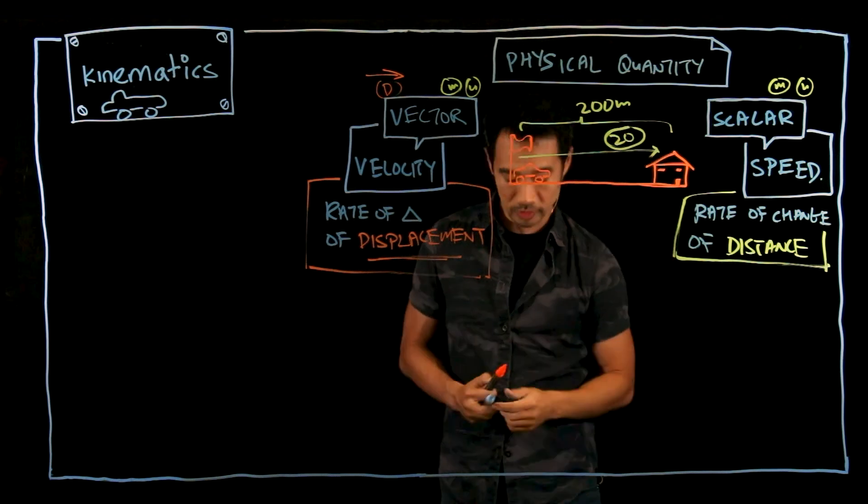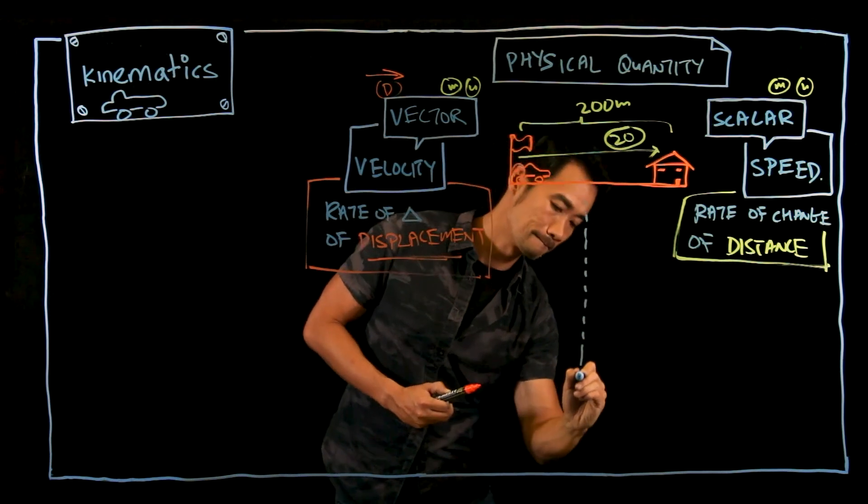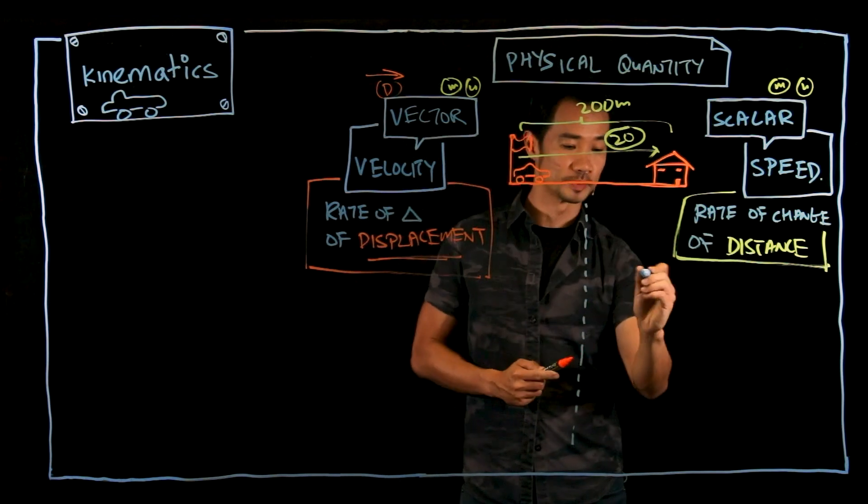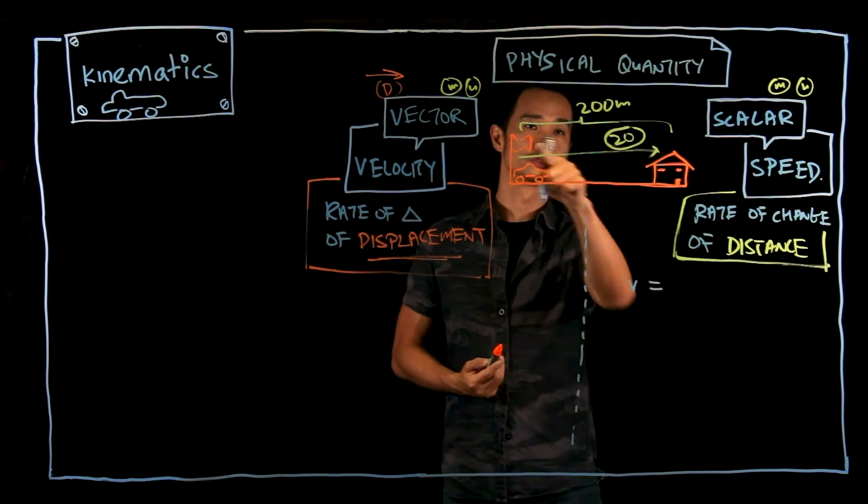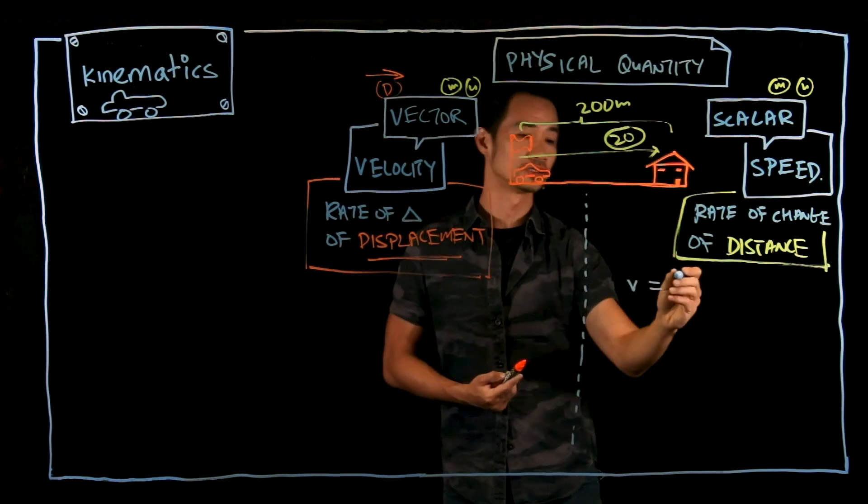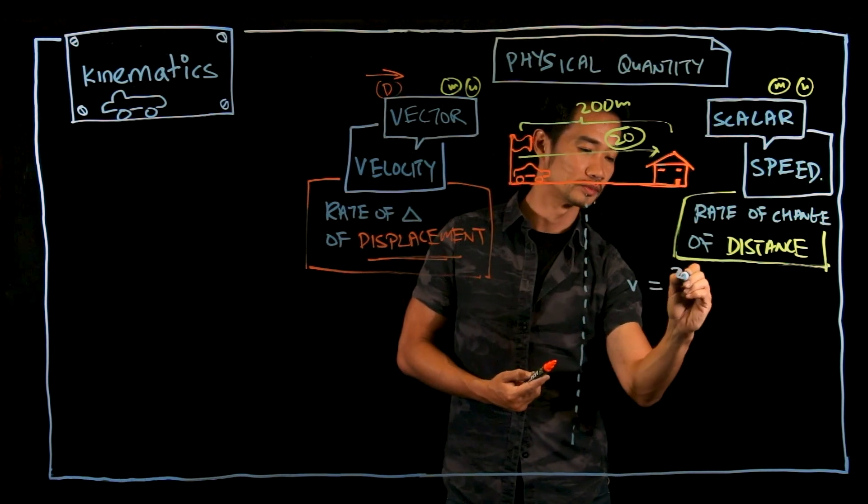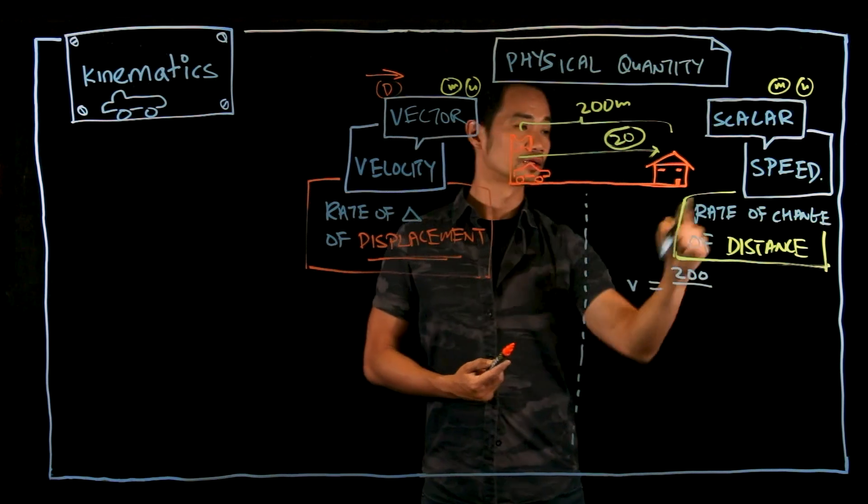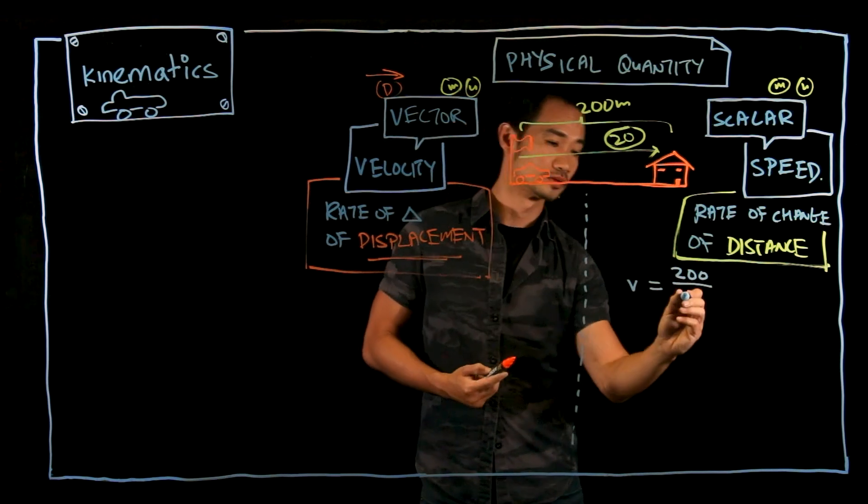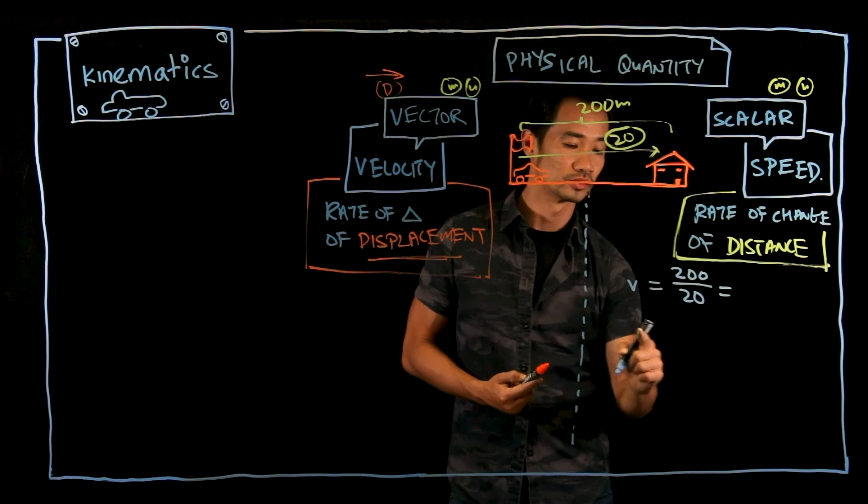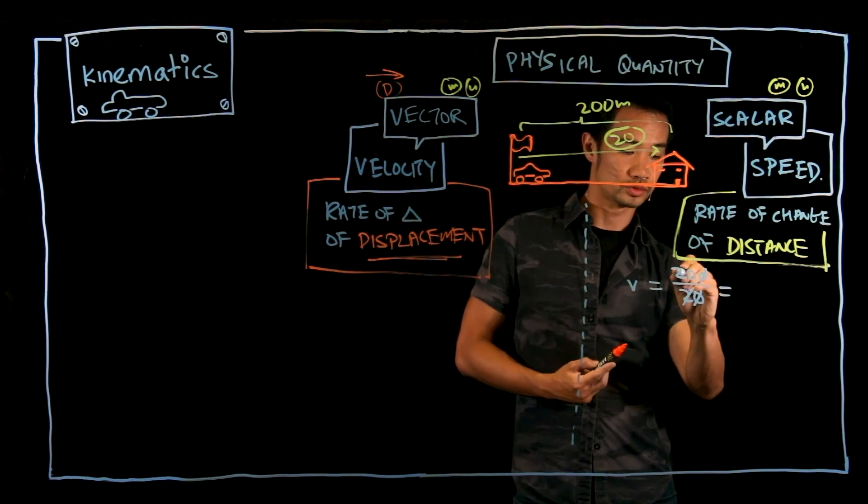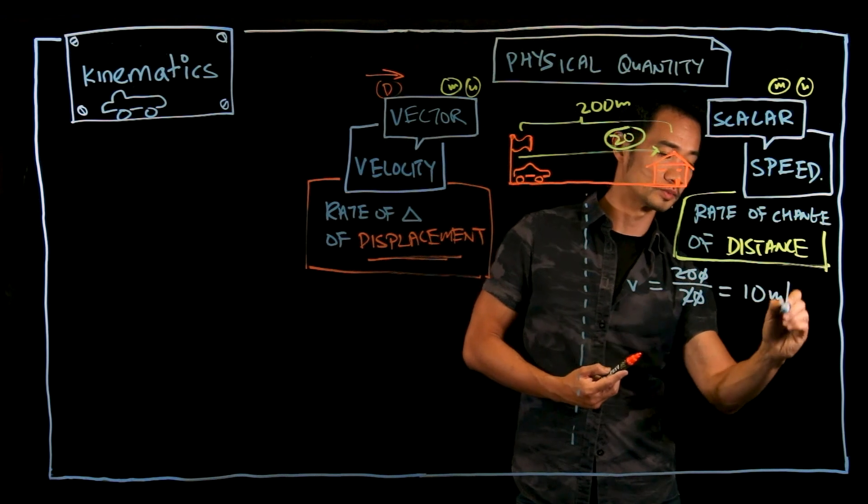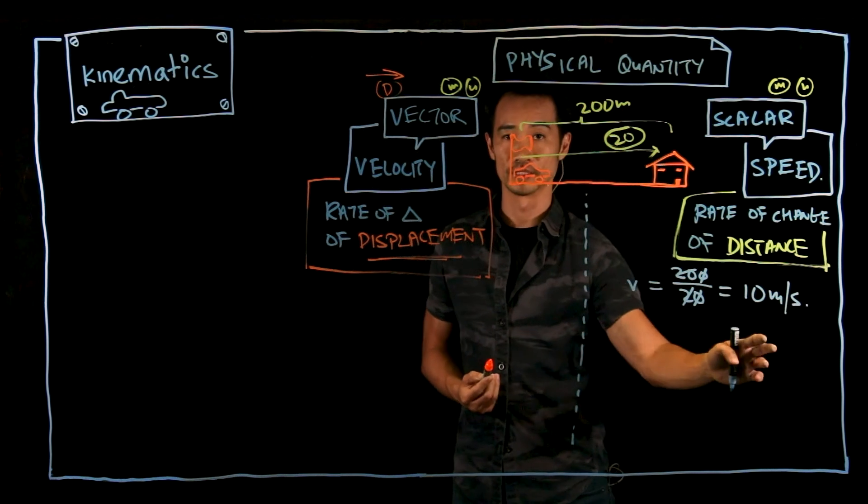If we were to calculate the speed, V is equal to rate of change of distance. So the change of distance going over is 200 meters, and the time taken for that change is 20 seconds. So your speed is equal to 10 meters per second. That is your speed.